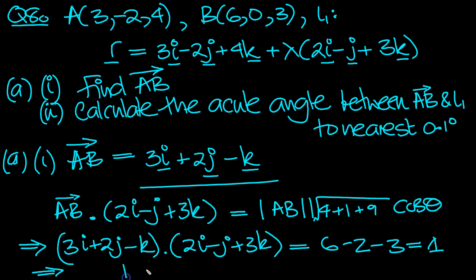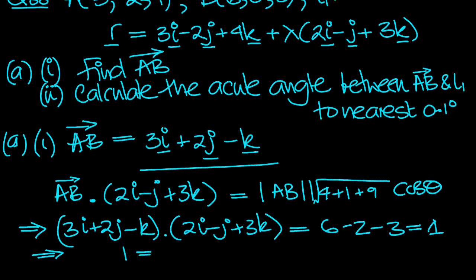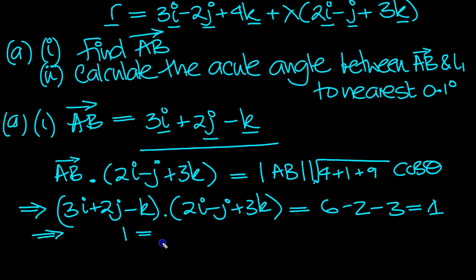So 1 is equal to the modulus of AB. Here's AB vector, so it's the square root of 9 plus 2 squared is 4 and -1 squared is 1, times itself again, the 4 plus 1 plus 9, times the cosine of theta.